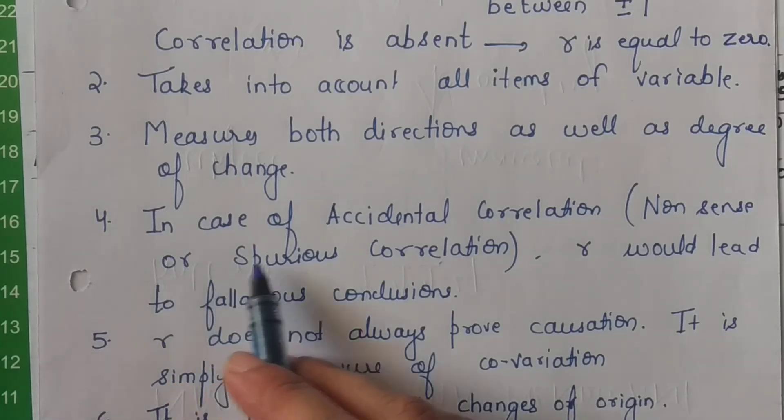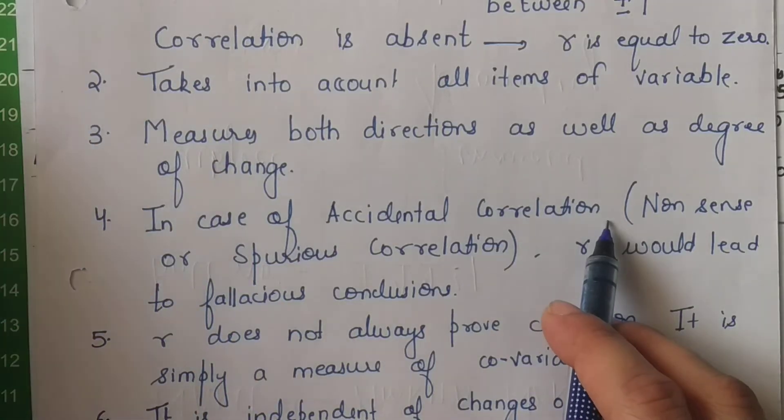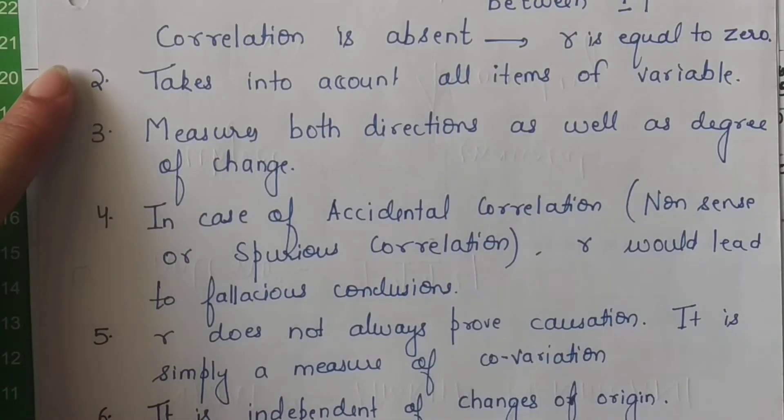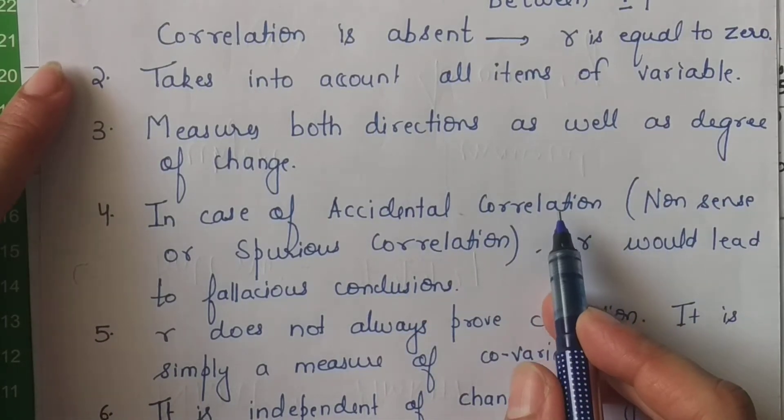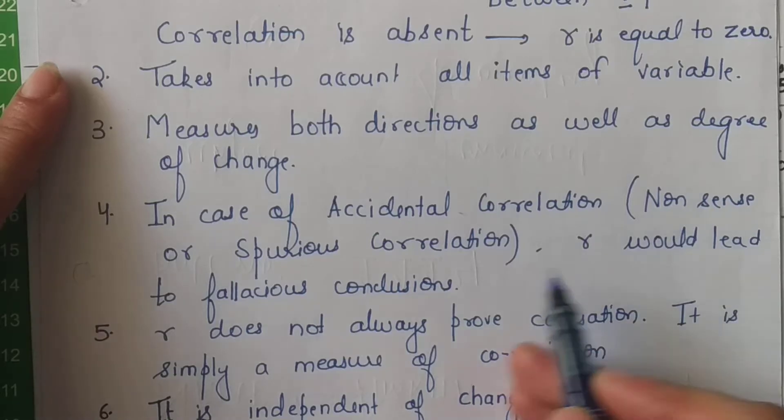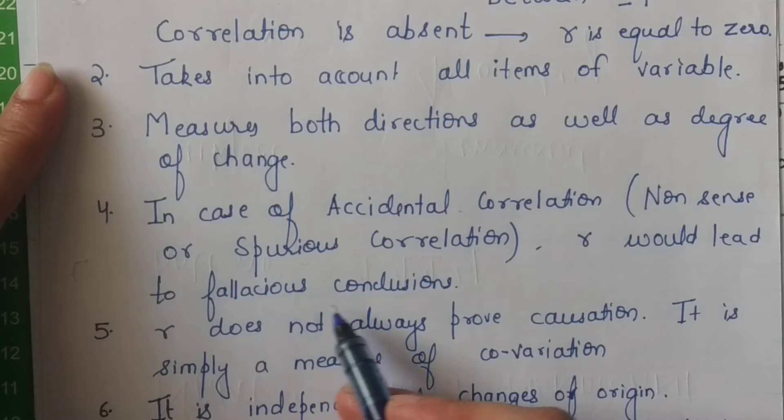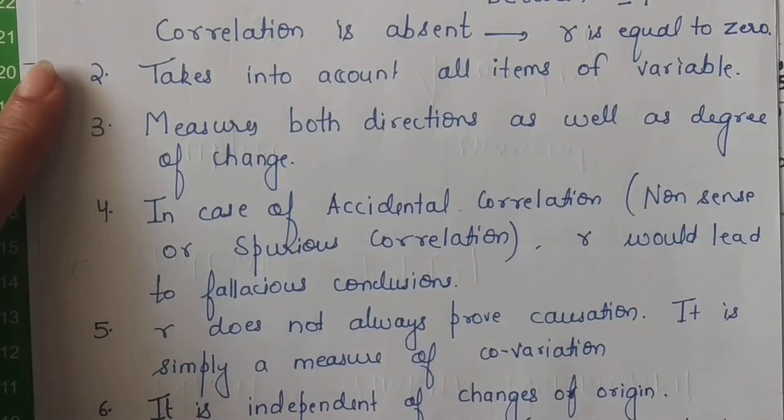Now the fourth one: in case of accidental correlation, jahan par aapne galti se do variables ke beech mein correlation assume kar liya hai, ise hum nonsense ya spurious correlation bhi kehte hai. Agar aap aise accidental correlation par trust karengi, faith karengi, toh aap galat conclusions ki taraf badh sakti hai. The value of r in that case would lead to fallacious conclusions.